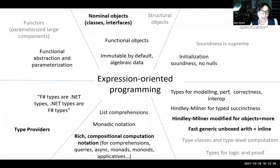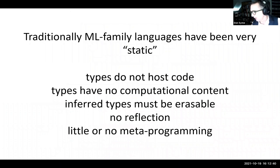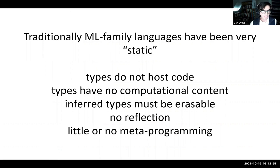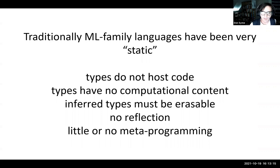So let's talk about static and dynamic and where we land on that. We came from OCaml — a very static point of view. There is no dynamic typing; types have no computational content. You can erase all the inferred types and the execution stays the same. There's little or no metaprogramming. That's the world we came from.